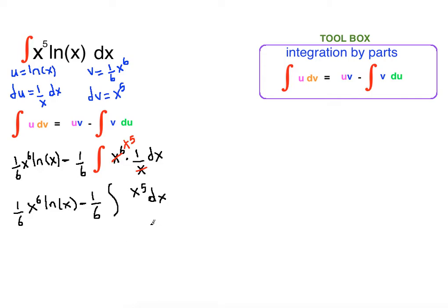Now we can finalize because we know how to take anti-derivative of x to the fifth. So 1 sixth x to the sixth ln of x minus 1 sixth times what is the anti-derivative of x to the fifth? It is 1 sixth x to the sixth plus c.